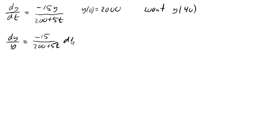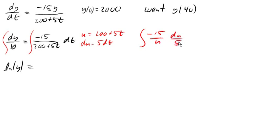And now we are ready to integrate, because now we are separated. So on the left, we're gonna have ln(y). On the right side, we're gonna need a substitution here. We're gonna need to let u equal 200 plus 5t. So du will be 5 dt, and so this will become negative 15 over u du over 5.